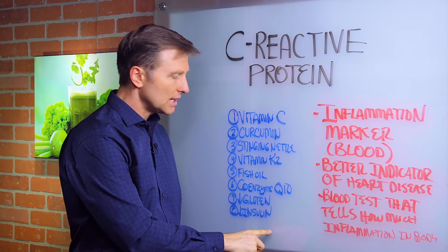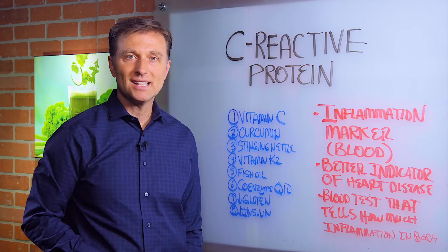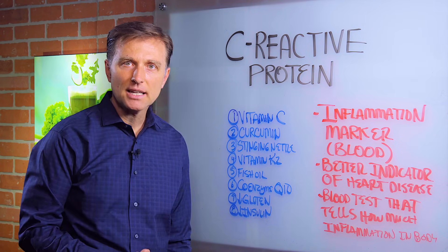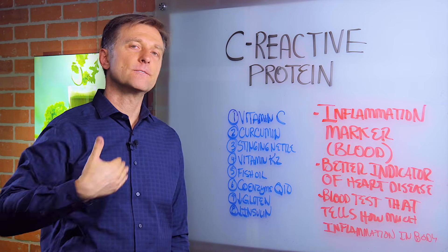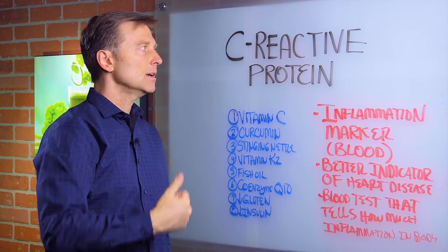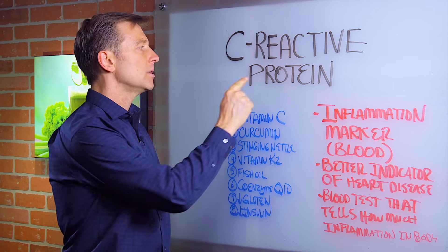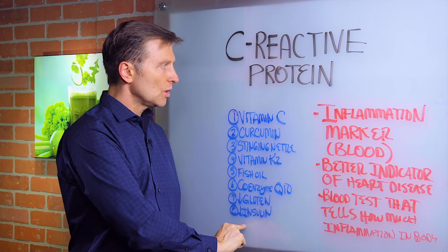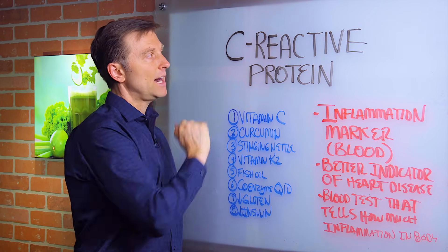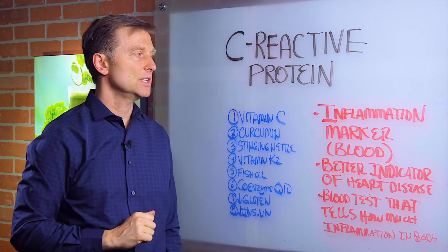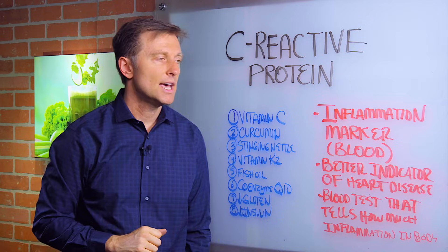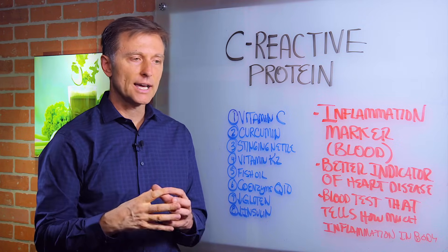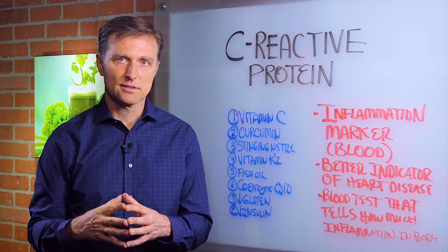Lastly, and most importantly, lower insulin. Cut the sugar out of the diet and cut out the frequent snacking. That will lower C-reactive protein, and that's probably the biggest reason why people have high C-reactive protein in the first place — and it's involved in the clogging of the arteries.